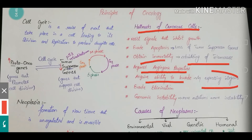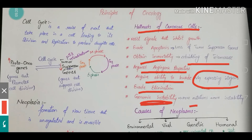Cancerous cells also acquire the ability to invade, and this is by means of expressing integrins on their surfaces. Integrins are proteins present on the cell surface by which cells attach to other cells. By expressing integrins, the cells acquire the ability to move from one place to another and invade deeper portions of an organ. They also evade elimination by the body's immunity and develop genomic instability — more mutations mean more instability, making the cell increasingly abnormal.